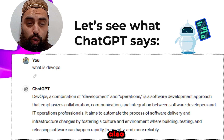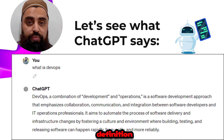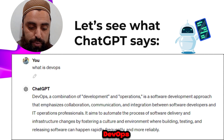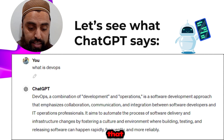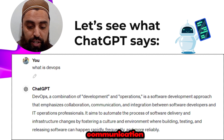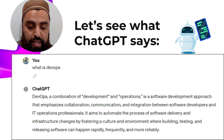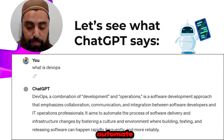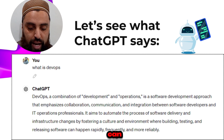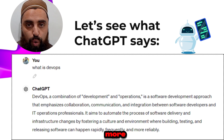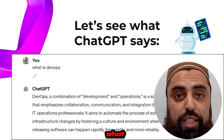I asked ChatGPT to define DevOps, and it stated the same definition: DevOps, a combination of development and operations, is a software development approach that emphasizes collaboration, communication, and integration between software developers and IT operations professionals. It aims to automate the process of software delivery and infrastructure changes.